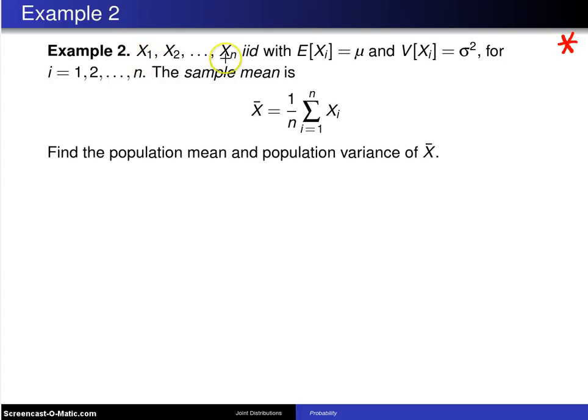In this case, x1 up to xn are going to be mutually independent and identically distributed random variables with finite mean μ and finite variance σ² for i equals 1 to n. The sample mean is x̄ equals 1 over n times the sum from i equals 1 to n of x sub i.